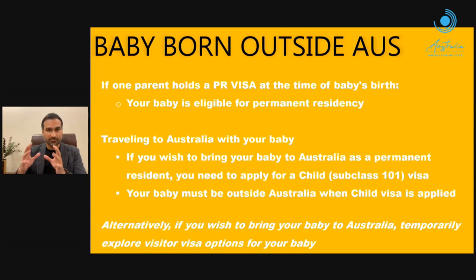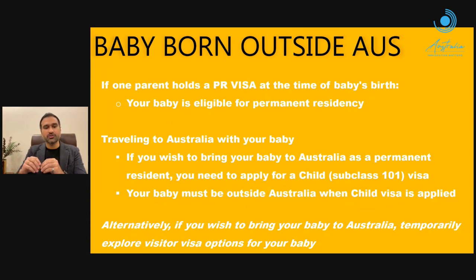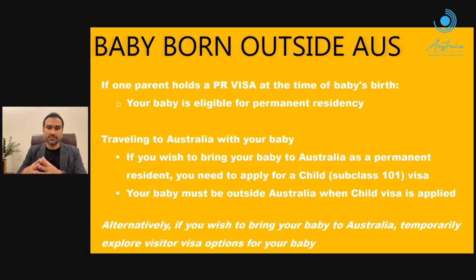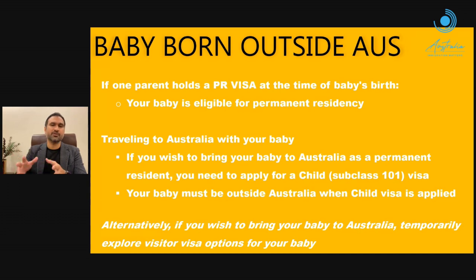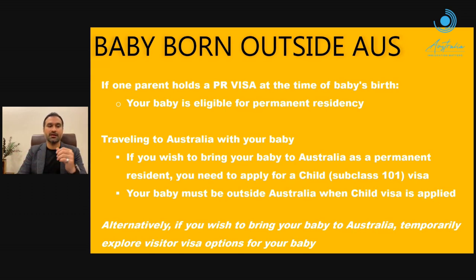Now let's talk about the second scenario: if at least one parent holds a permanent residency visa at the time of the baby's birth. Your baby is eligible for permanent residency. If you want to bring your baby to Australia as a permanent resident, you need to apply for a child subclass 101 visa. Your baby must be outside Australia when you apply for the child visa. Alternatively, you may explore the option of a visitor visa to travel with your baby while the child visa is being processed, since child visas are taking longer.